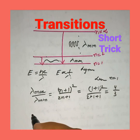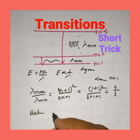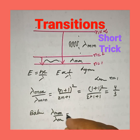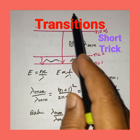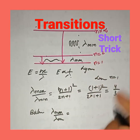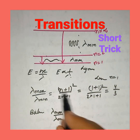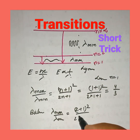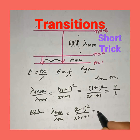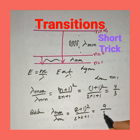Similarly, for the Balmer series, if you want to find out lambda maximum by lambda minimum — Balmer series means the transition takes place from different energy levels to the second energy level, where n equal to 2. So therefore, (2+1)² by (2×2+1) gives you 9 by 5.